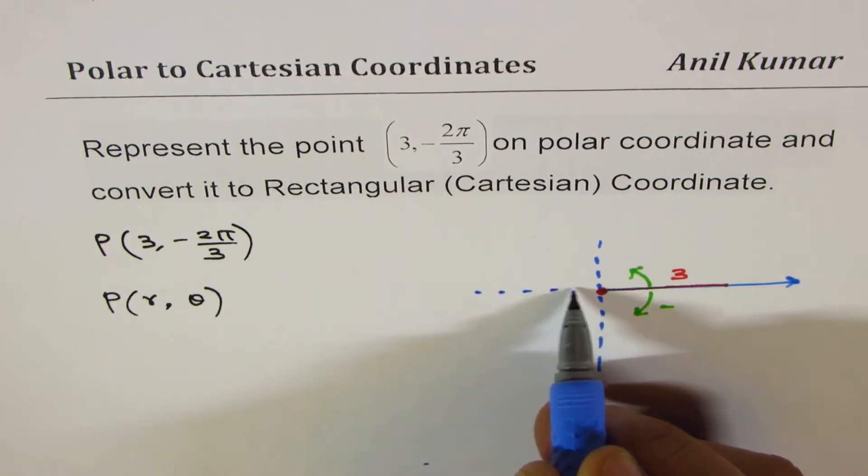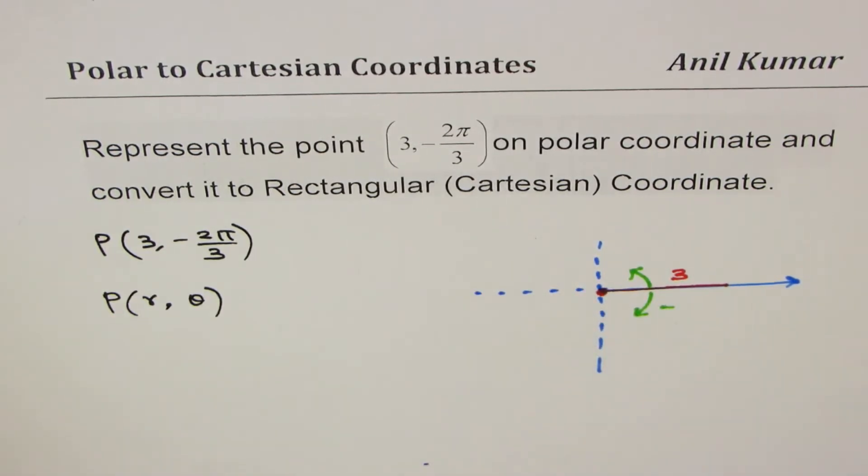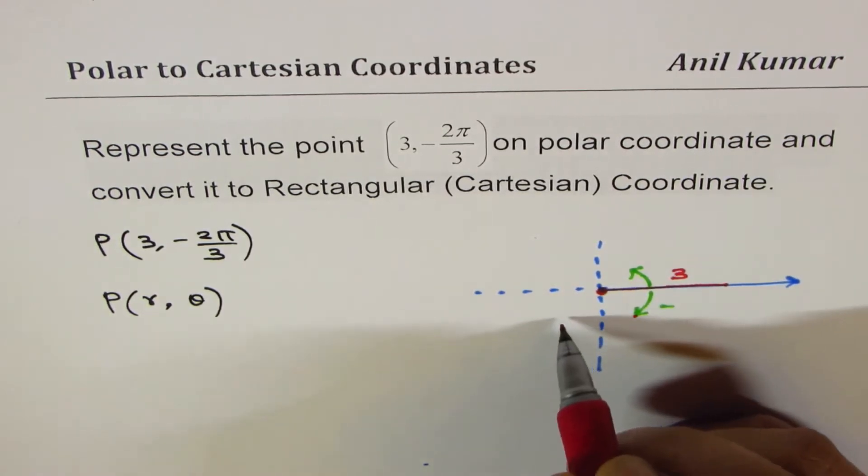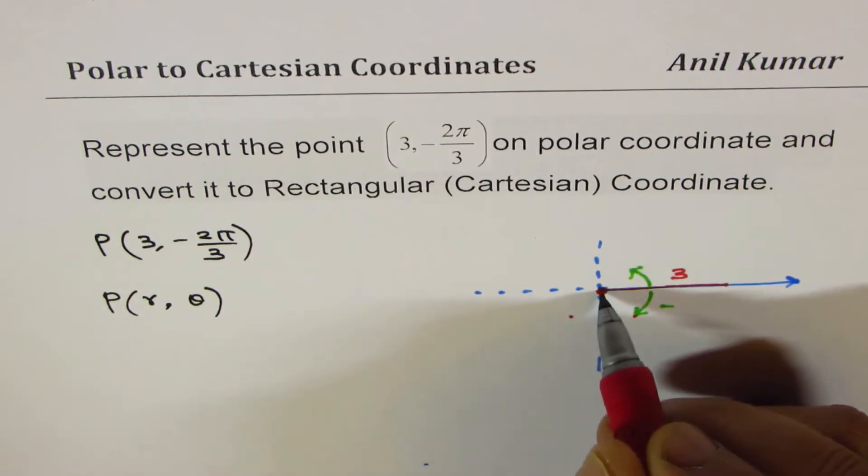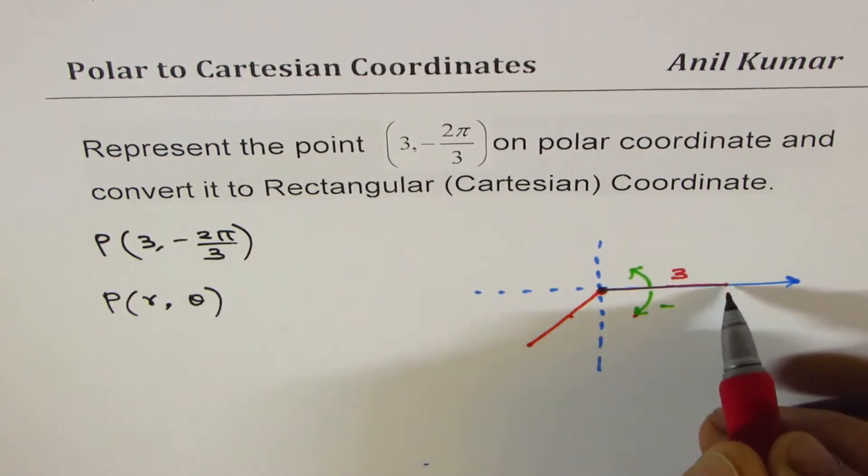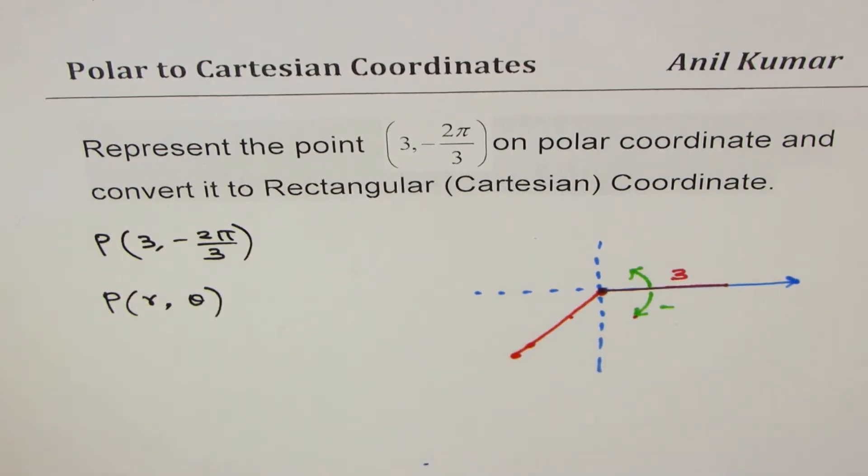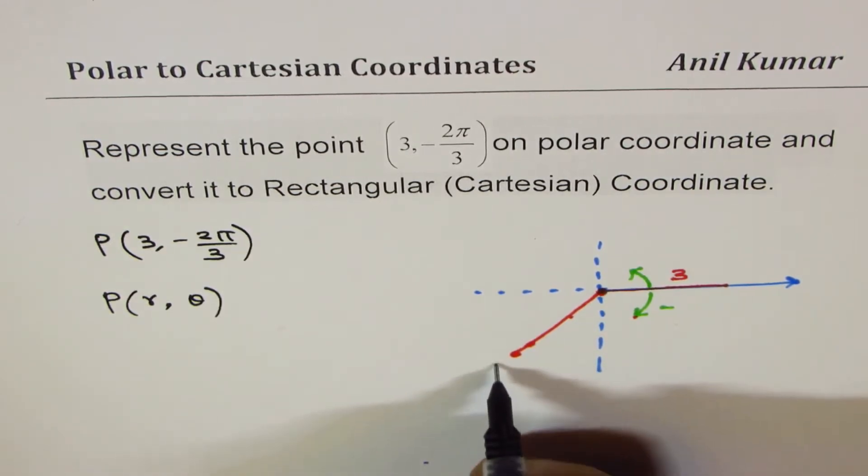Now moving -2π/3 really means that you have to go clockwise 2π/3. Let me just sketch the coordinate plane also. 2π/3—this is π/3 and this is 2π/3, so somewhere here it becomes 2π/3.